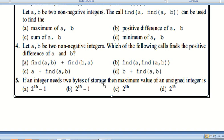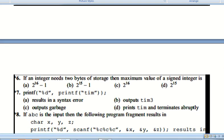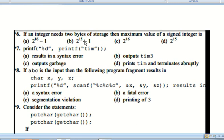Question number five: If an integer needs two bytes of storage, then the maximum value of an unsigned integer will be 2 to the power 16 minus 1. Question number six: For a signed integer, the value is 2 to the power 15 minus 1. Option D is correct.